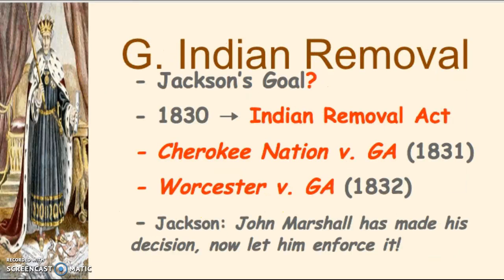The next issue with Andrew Jackson is Indian removal — again, states' rights issues will come up with the Indian Removal Act of 1830 and the federal government. In 1830, the Indian Removal Act was a plan to remove the five nations — Cherokee being one — from the east and move them west to new western lands. Manifest Destiny is part of this, and the tribes were to be moved to an area in Oklahoma, though they did not want to go and wanted to stay on lands promised to them by federal treaties.